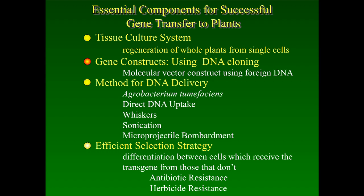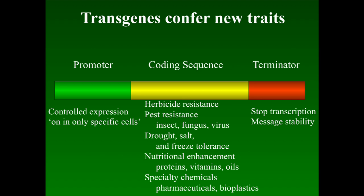Those tissue culture systems were put in place during the 60s and early 70s for all kinds of plants, including the monocot plants. After 1972, gene constructs could be constructed — your favorite gene could go into this cassette. You could design things for herbicide resistance, pest resistance, drought tolerance, nutritional enhancement. So now we have a method to cut and paste DNA, a method to grow plants back from single cells. If we can put the DNA into cells, we're almost there.